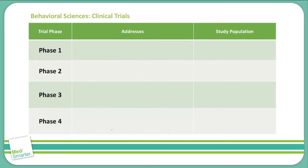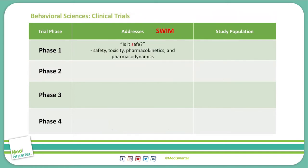Let's discuss clinical trials. We have four phases: phase one, phase two, phase three, and phase four. Each phase addresses various topics and studies different types of populations. The mnemonic to understand what each phase addresses is SWIM, and we will cover SWIM as we go through each of these phases.